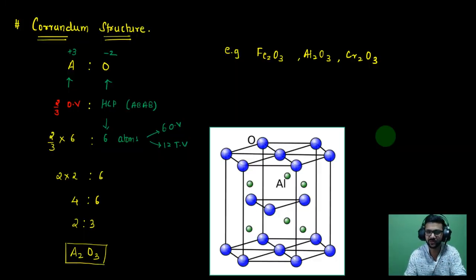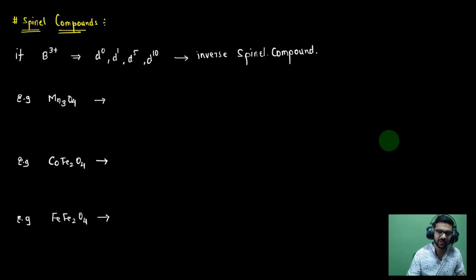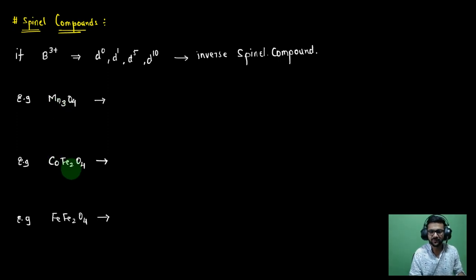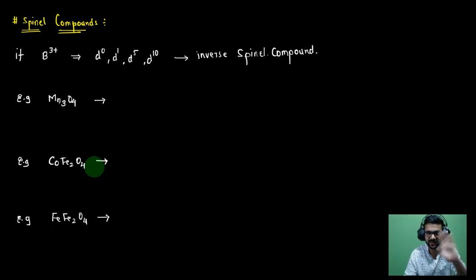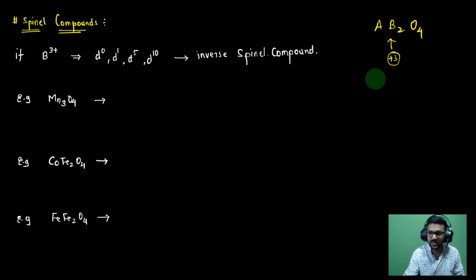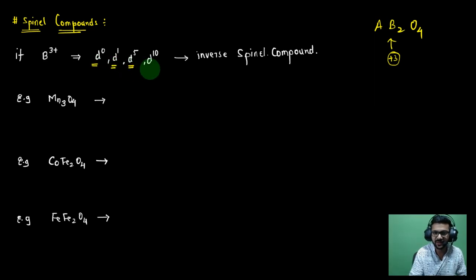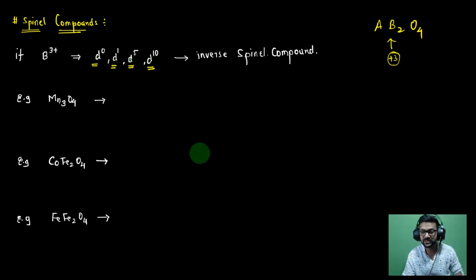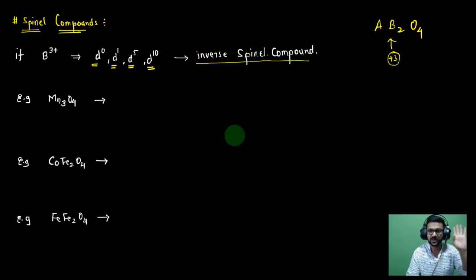In coordination chemistry exams, you are given compounds like Mn₃O₄, CoFe₂O₄, or FeFe₂O₄ and asked whether they are normal or inverse spinel. The trick: look at element B, which is in the +3 oxidation state. If B is a D-block metal and its electronic configuration in the +3 oxidation state is D0, D1, D5, or D10, then the compound is an inverse spinel. Otherwise, it is a normal spinel.